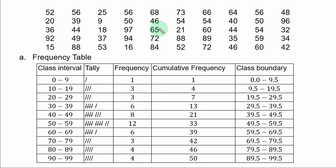Part A is to construct a frequency table. Now we have the class interval 0 to 9, 10 to 19, 20 to 29 as the sample given in the question.